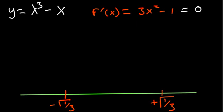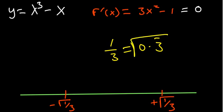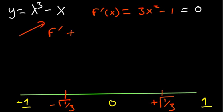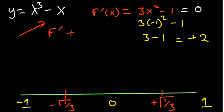One over three is approximately 0.333 recurring, so its square root is a value less than one. This lets us predict: outside the turning points the first derivative is positive, and between them it's negative. We use test points: plugging in negative one into 3x squared minus 1 gives 3 minus 1, which is positive 2 — so that leftmost part is increasing.